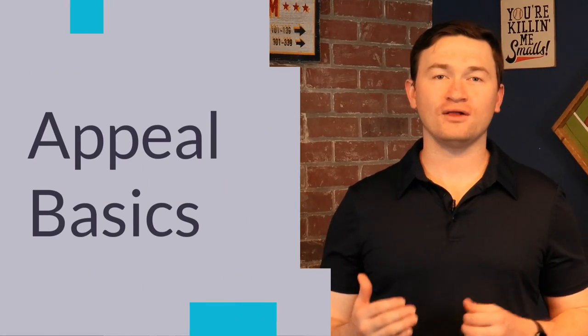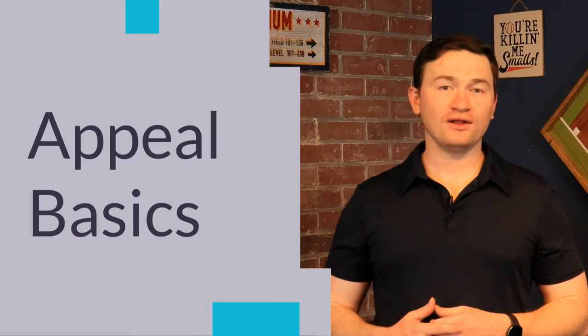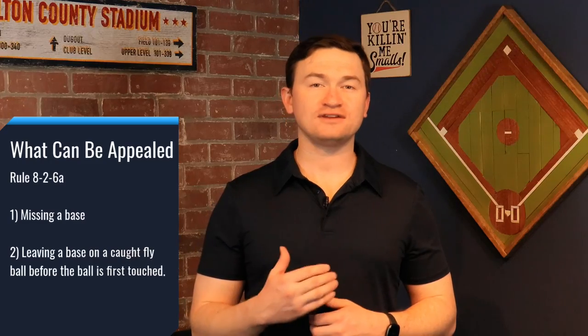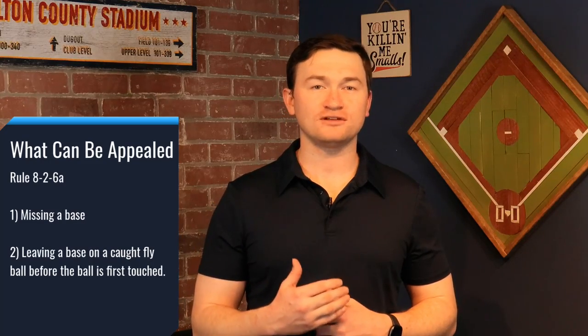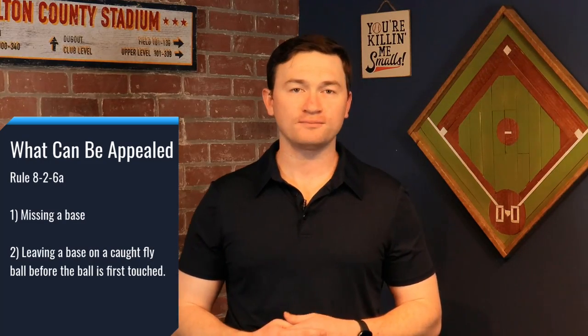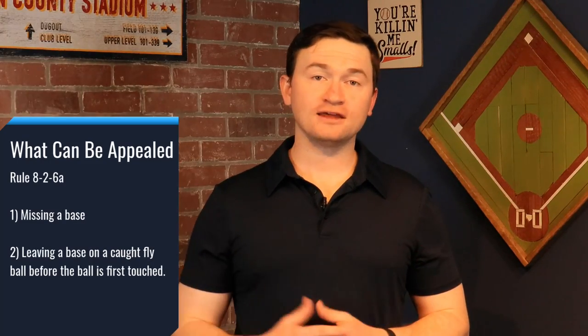Let's get started. The defense has two different situations they can appeal in a game, which are laid out in rule 8-2. They can appeal if a runner missed a base, or if they fail to tag up as soon as the ball is touched on a caught fly ball. To make the appeal, they have two options on how to do it.